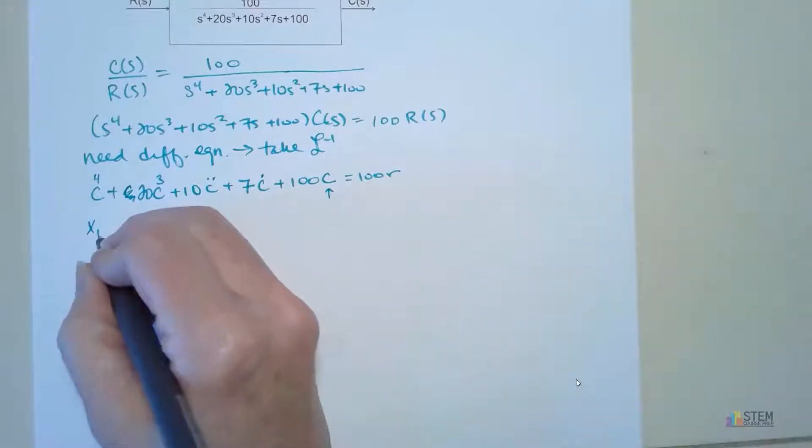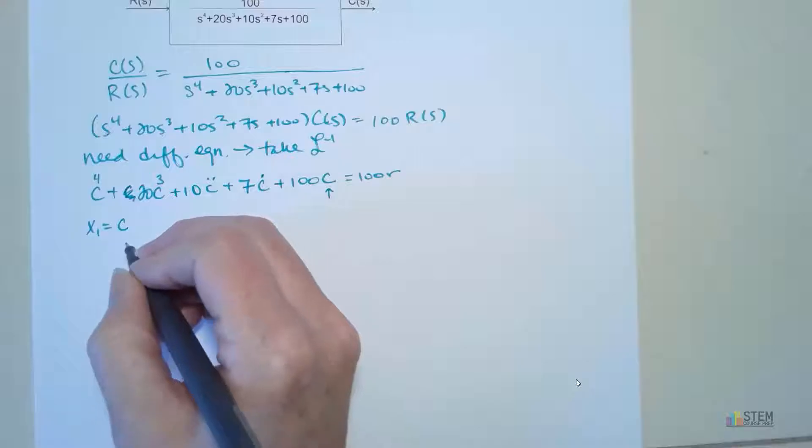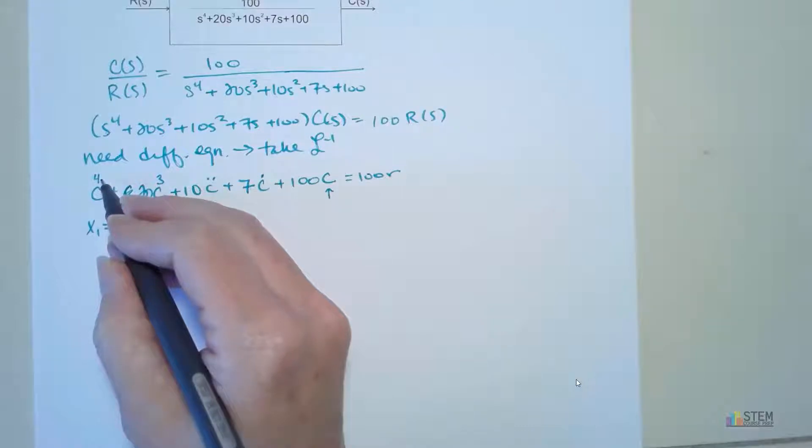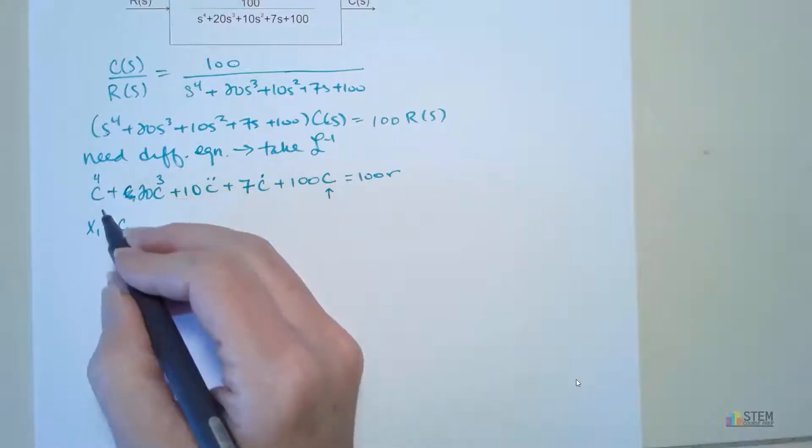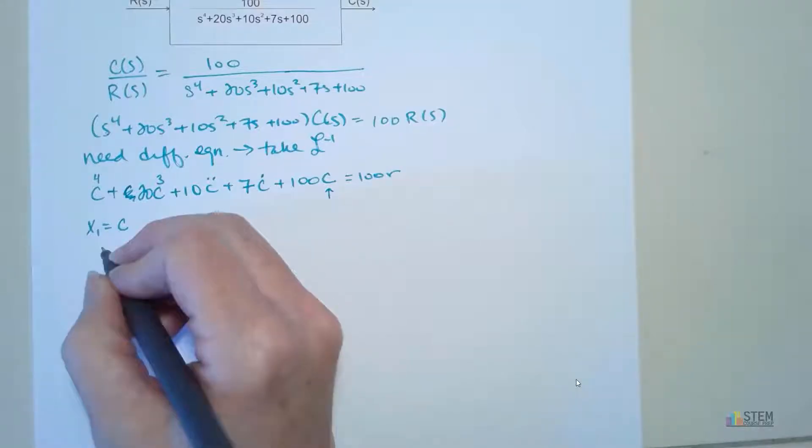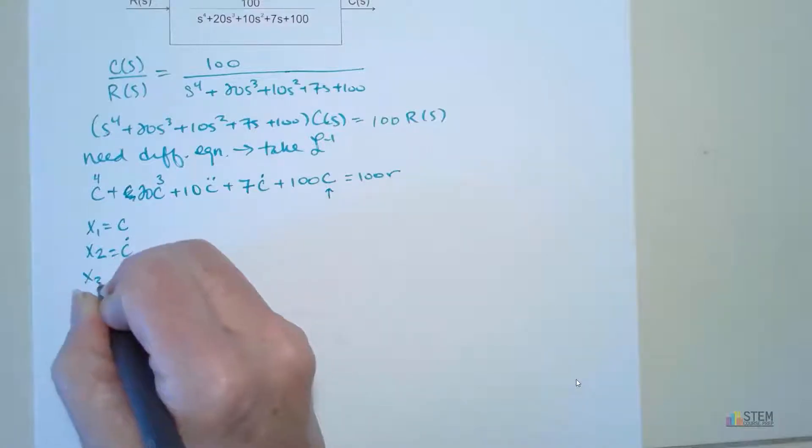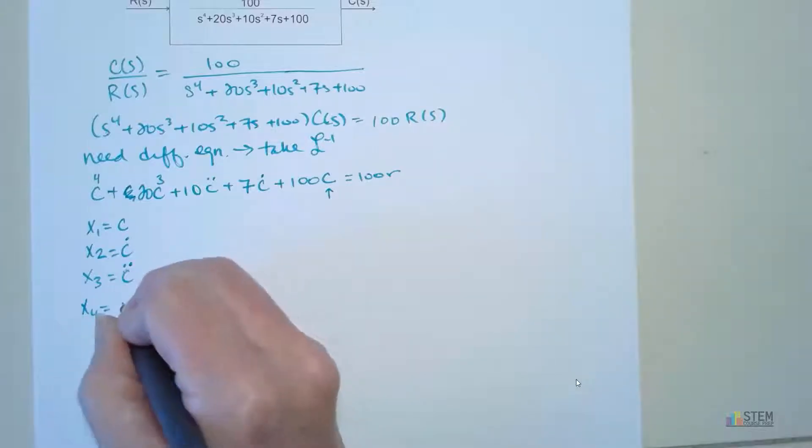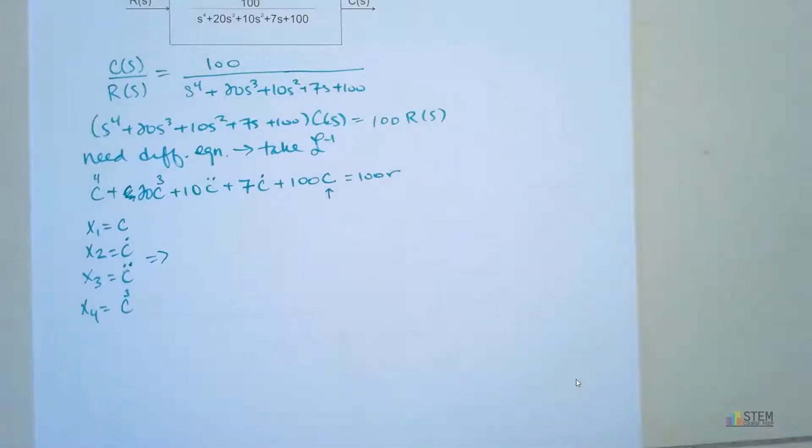Our output is going to be c, because that's our dependent variable here. So our system variables, we're going to have x1 equals c. And then we're going to go down until we get to the n minus 1 derivative. We have c to the 4th here. So that means n is 4. So we're going to go to the 3rd derivative. So x2 will be c dot. x3 will be c double dot. And then x4, for the 3rd derivative of c.